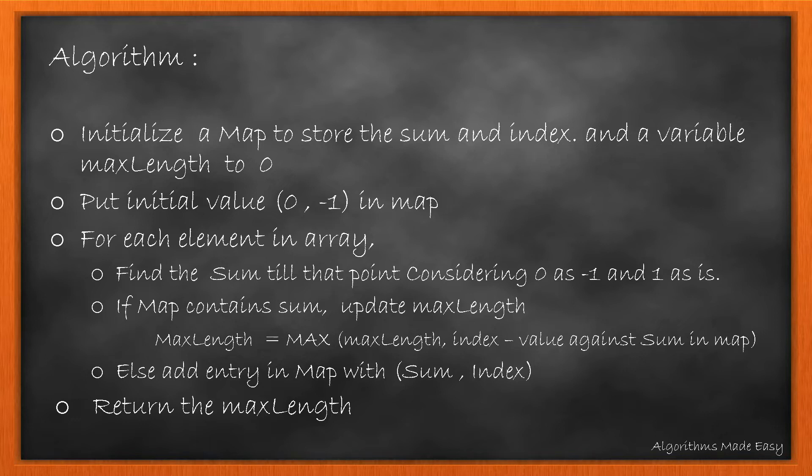Initially, we will consider that the sum was 0 at index –1, so we will put 0, –1 in the map. Now we will traverse each element in the binary array. For finding the sum, we will consider all 0s as –1 such that they bring an effect whenever we cross it.